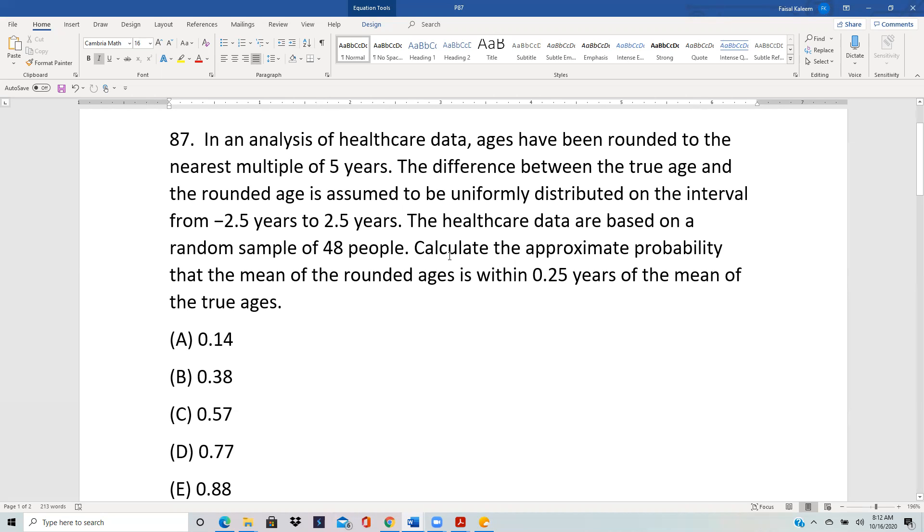We will consider the age of one person and the difference between the true age and the rounded age. Since there are 48 people, which is bigger than 30, central limit theorem will apply. Therefore, we will need the mean and the standard deviation.